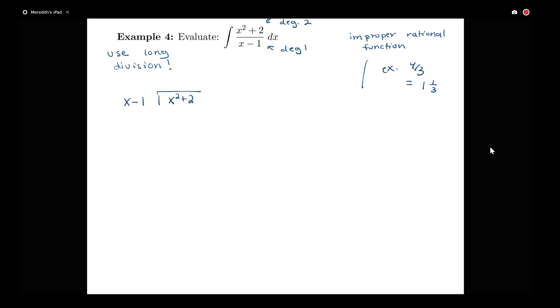I see that x minus 1 goes into x squared plus 2 x times, and then I'm going to multiply that x times my x minus 1, so that gives me x squared minus x. Subtract that down just like we would in regular long division.